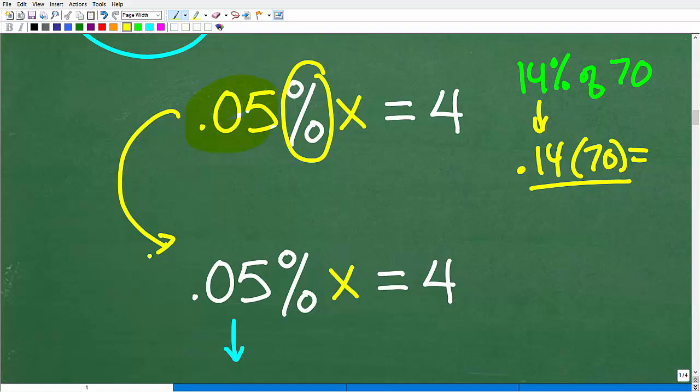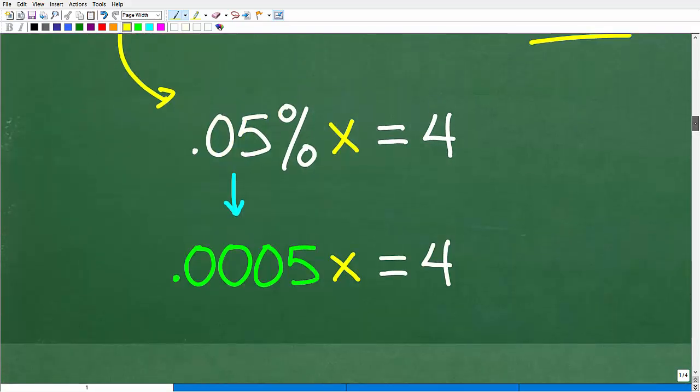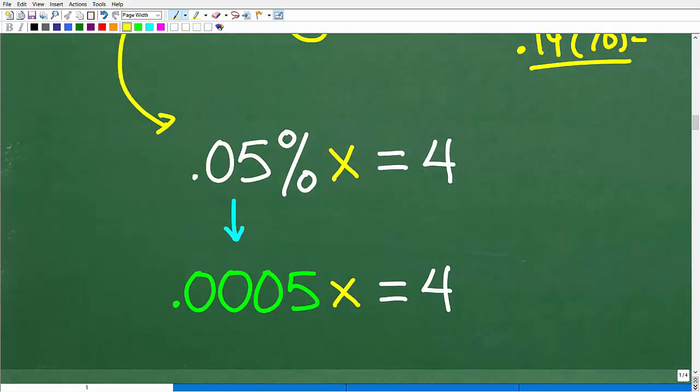Let's see that right now. 0.05% of x. We want to change this percent to a decimal. So, when you take 0.05, feel free to use your calculator. Divide by 100, you're going to get 0.0005x is equal to 4.